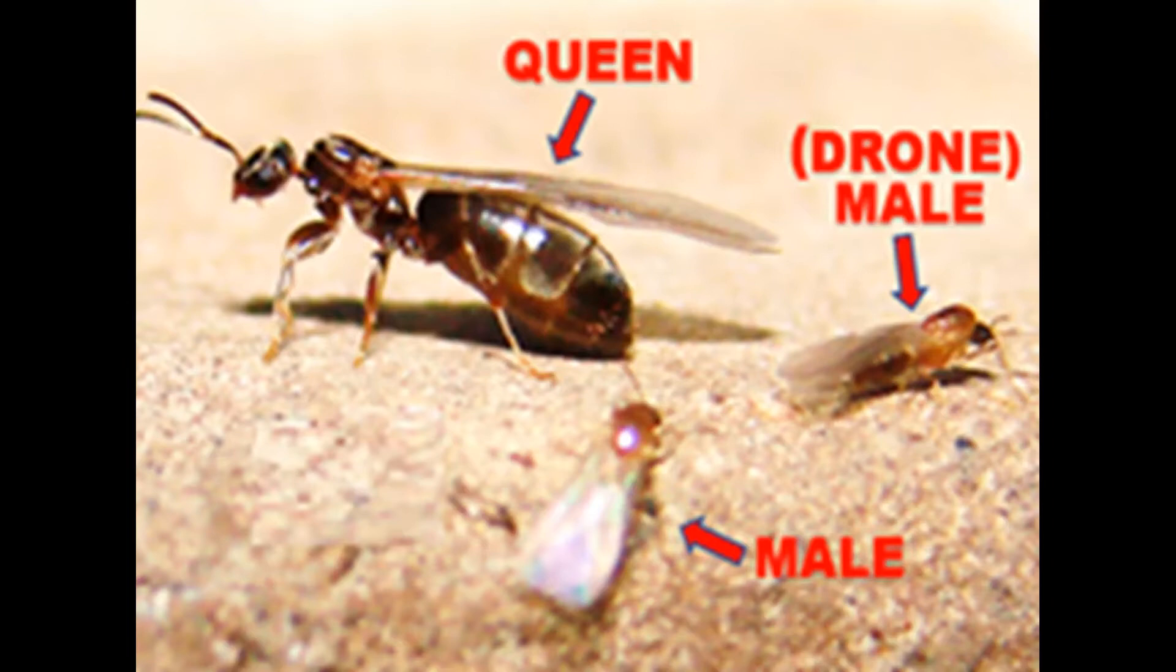Another way to identify the ant queen is that sometimes they have wings, but don't mistake them with the males because the males also have wings but the male size is smaller than the queen. The queen is usually larger than the male.